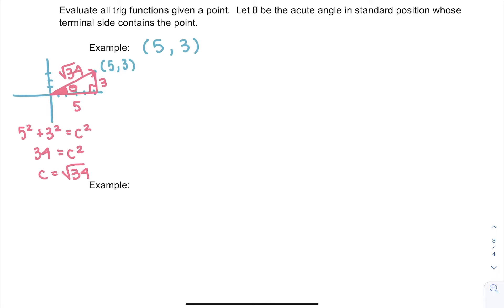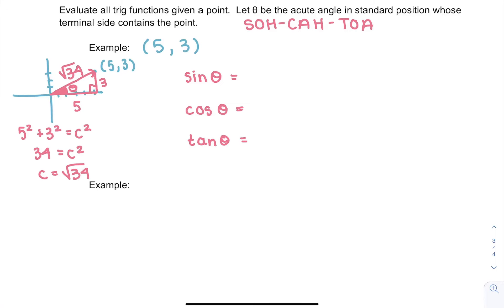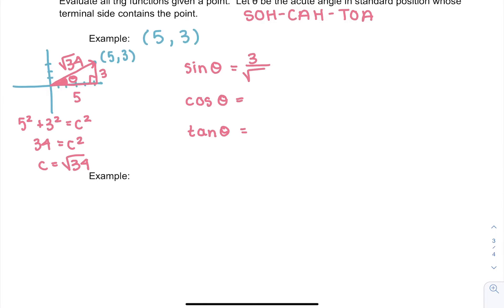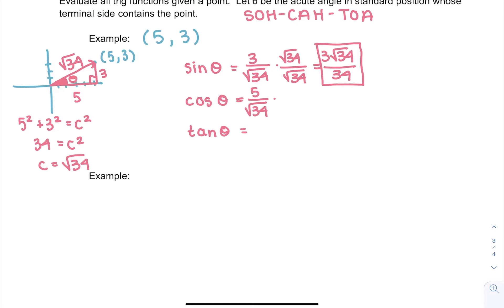Now we have everything we need to find our six trig functions. Using SOH-CAH-TOA: sine of theta is opposite over hypotenuse, which is 3 over square root of 34. Rationalizing — multiply top and bottom by square root of 34 — gives 3 square root of 34 over 34. Cosine is adjacent over hypotenuse, which is 5 over square root of 34, rationalized to 5 square root of 34 over 34. Tangent is opposite over adjacent, which is 3 over 5.